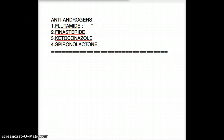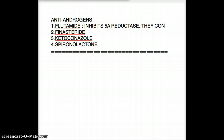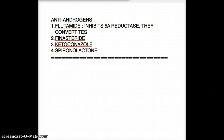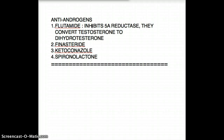The first drug is flutamide. The mechanism of action of flutamide is that it inhibits 5-alpha reductase. What does 5-alpha reductase do? It converts testosterone to dihydrotestosterone. Dihydrotestosterone is the more potent of the two — testosterone is potent, but dihydrotestosterone is more potent than testosterone. So flutamide is a 5-alpha reductase inhibitor.